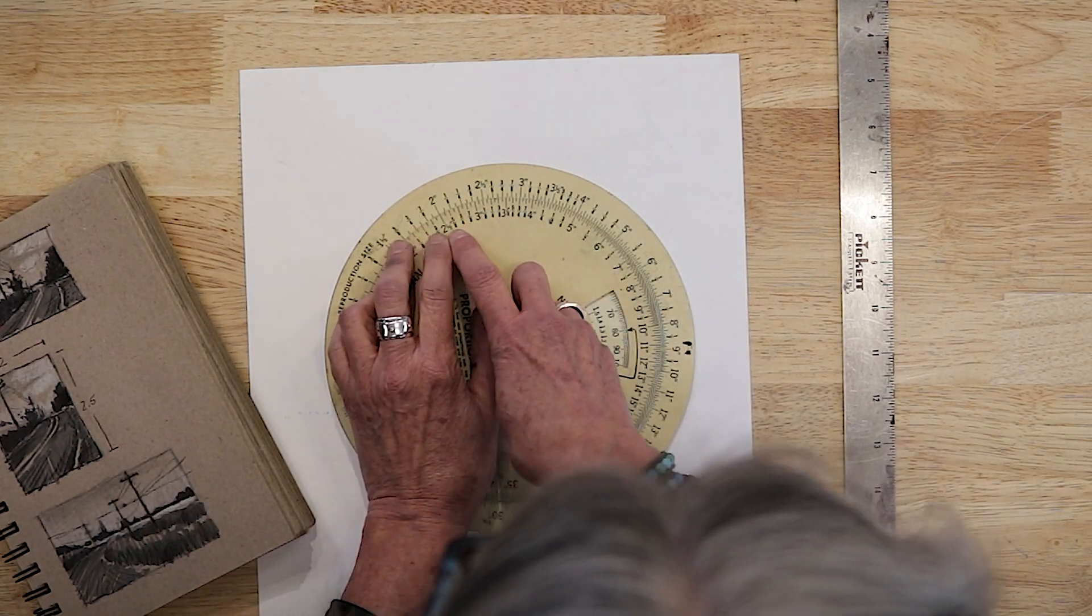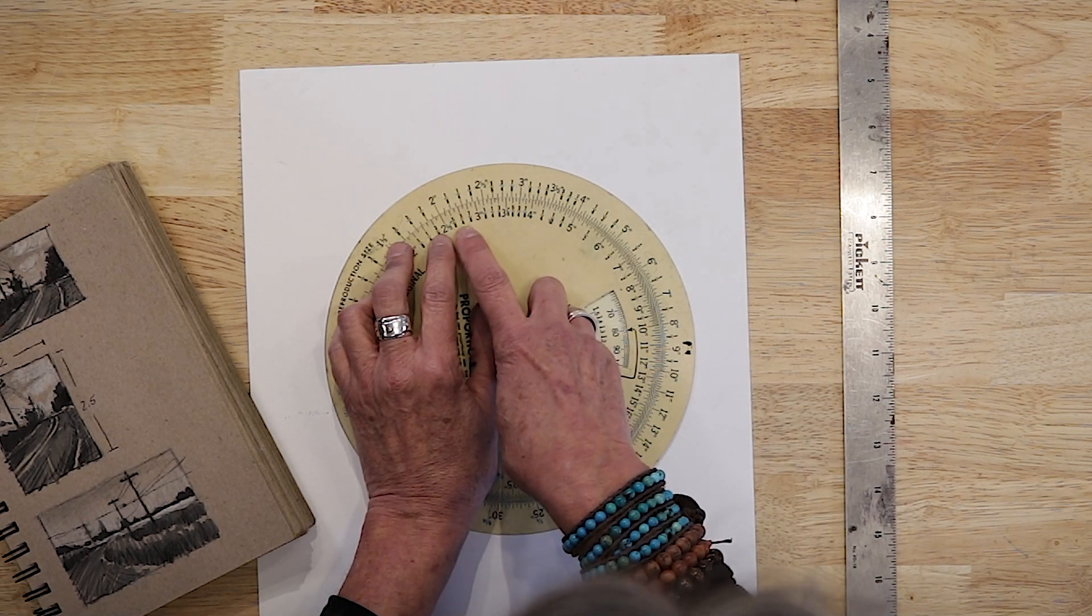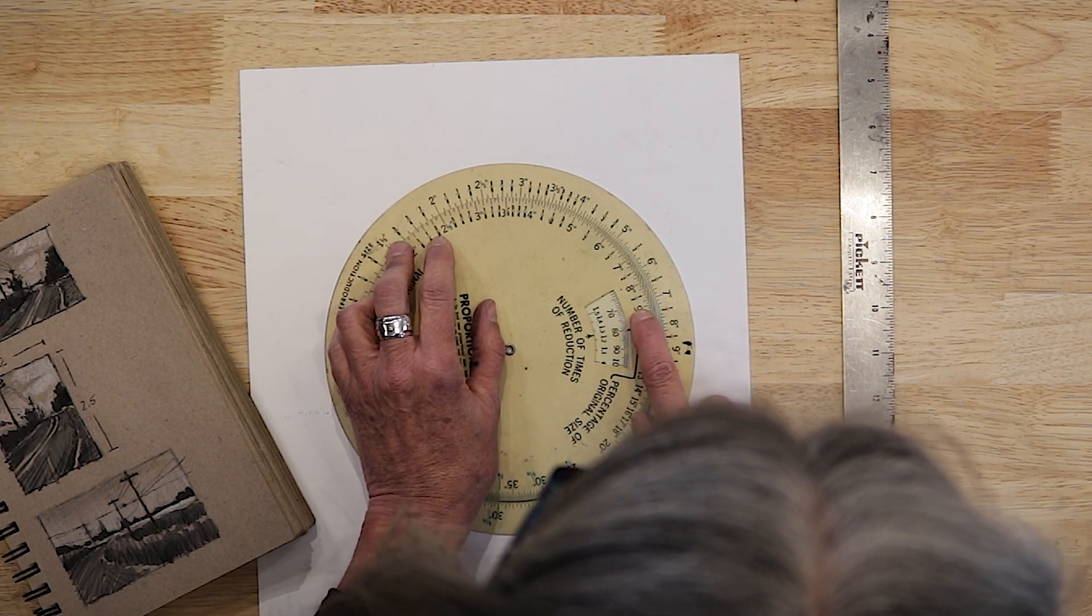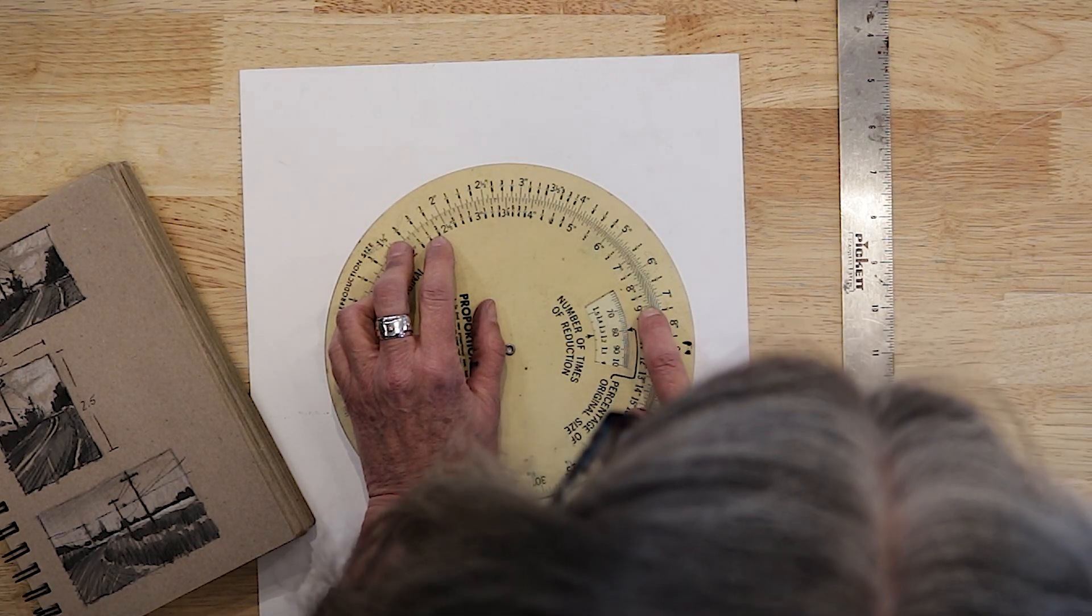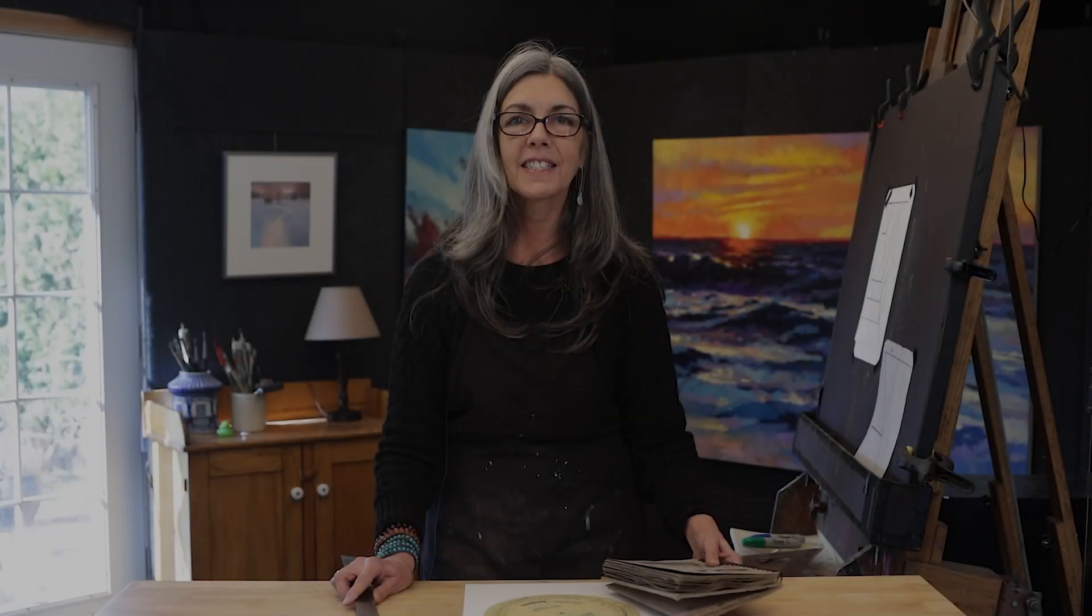So say I want my final piece to be a length of nine inches. So then that's going to be seven and a quarter width.